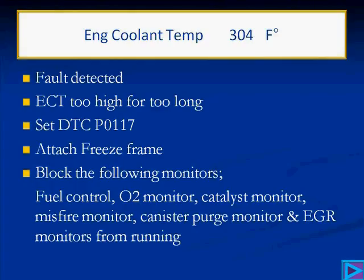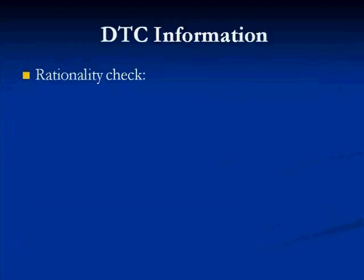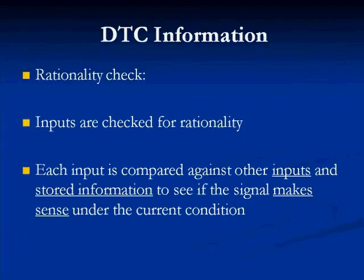When you're on the I&M readiness status page of your scan tool, those blocked monitors are going to say 'not completed.' You'll see inside the DTCs that the P0117 is saying the ECT is too high. A rationality check tells us that inputs are checked for rationality — each input is compared against other inputs. The computer is saying: my IAT doesn't have any faults, so I'm going to believe that and compare the ECT, which is 304 degrees. They don't compare, so that's not rational.